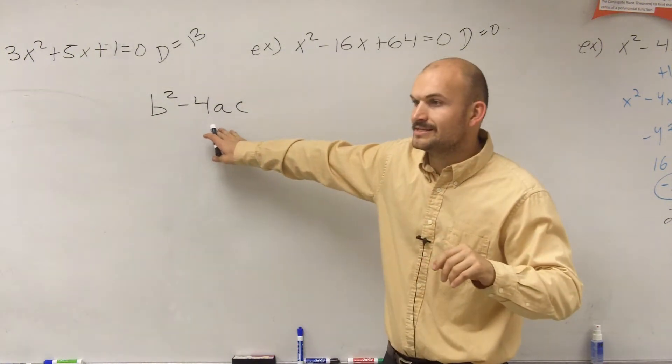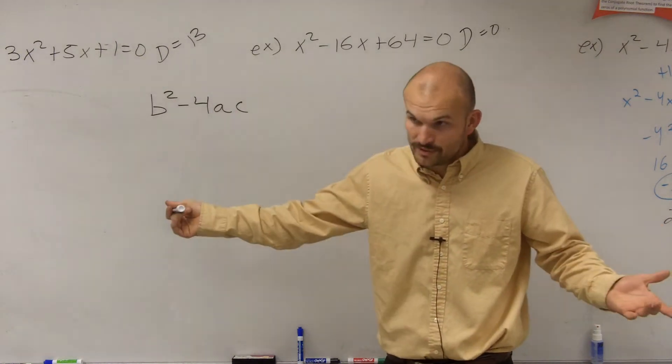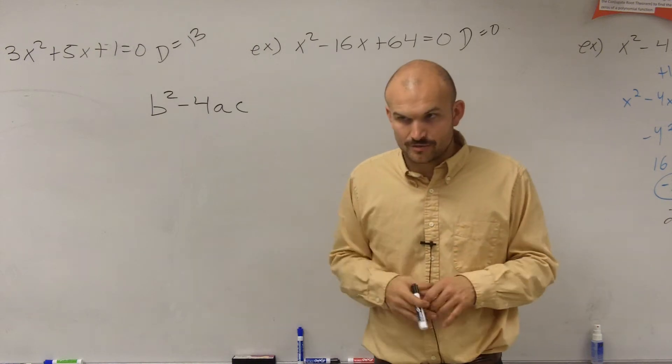If this number is a positive number, but it's not a square number, we can't take the square root of it, so we're going to have two real irrational roots.